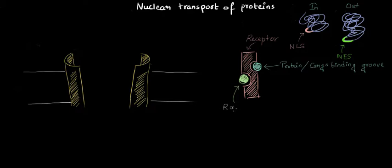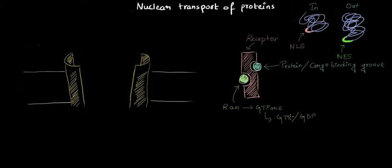This molecule is called RAN, and that binding site is called the RAN binding group. RAN is a protein which is a GTPase. As the name suggests, a GTPase can shuffle between GTP and GDP — it can bind GTP and, on a certain signal, hydrolyze GTP into GDP. RAN is this kind of GTPase, and both RAN and the protein to be transported bind to the receptor that facilitates transport in and out of the nucleus.